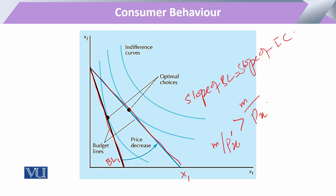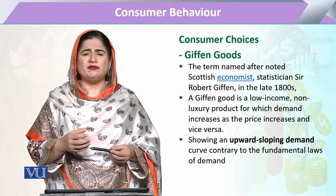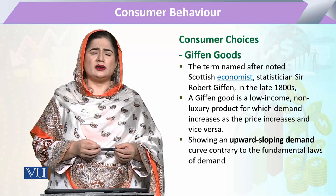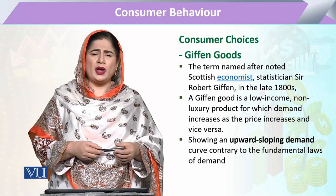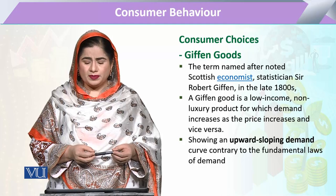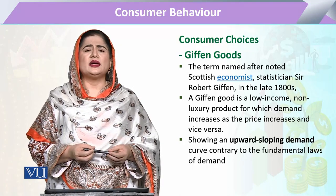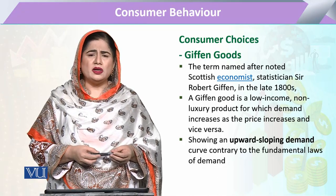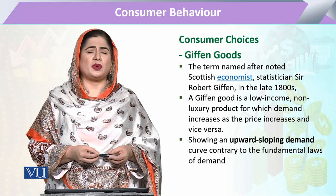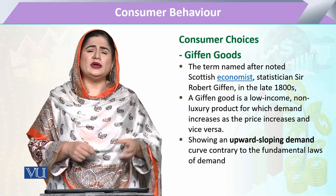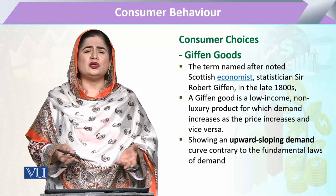Any commodity that exhibits this type of behavior is called an ordinary good. The change in price and the change in quantity demanded go in opposite directions. Now, there are certain other goods that behave differently — they are called Giffen goods, named after the economist who explored this behavior. Scottish economist Robert Giffen expressed that there are certain commodities whose demand increases with an increase in their price, which is very astonishing.